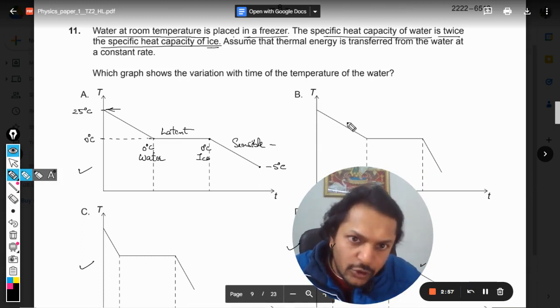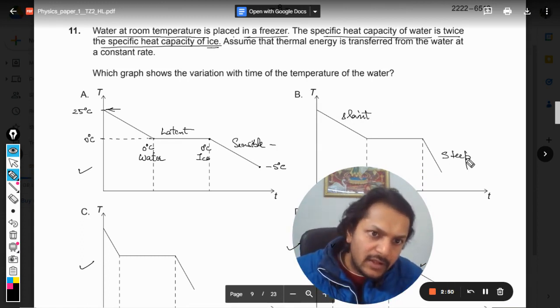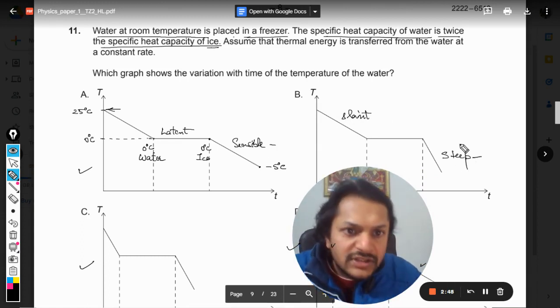In option B, this slope is slant comparatively and this is steep. So this is ice and this we're talking about water. Obviously it is given that the specific heat of water is twice bigger than the specific heat of ice.